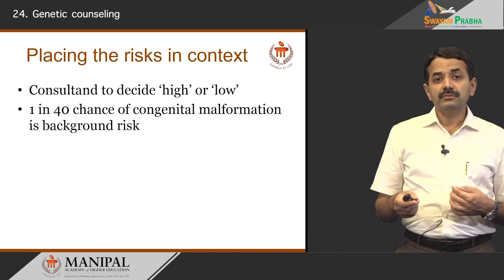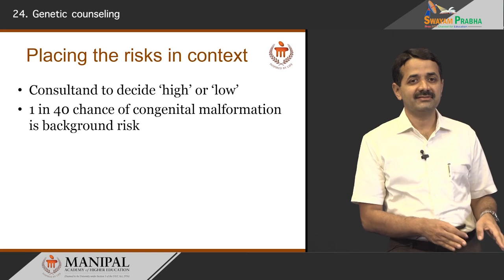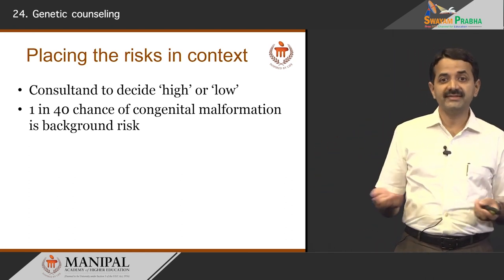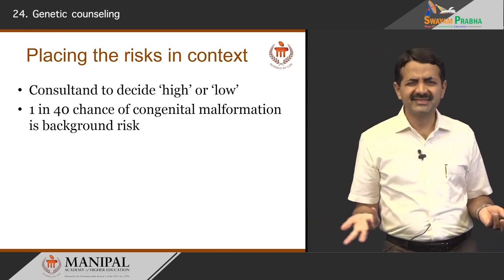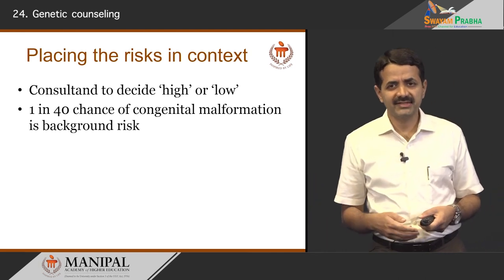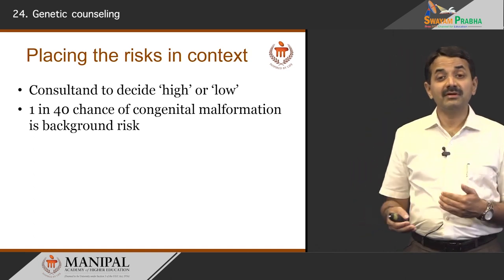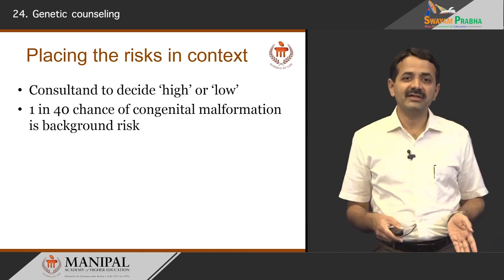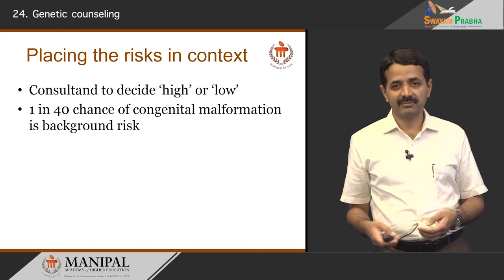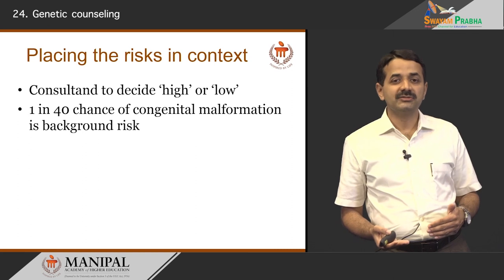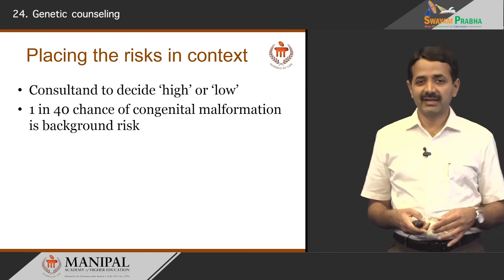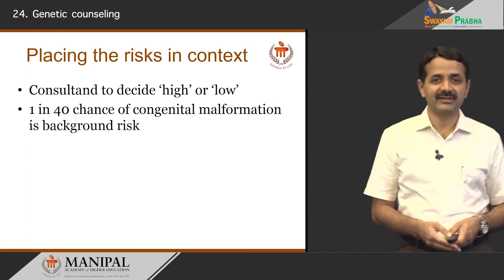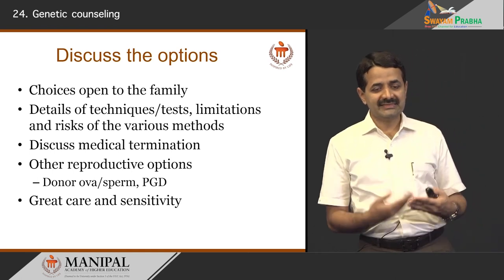It is important to understand that it is the patients, families, or consultands who decide whether a particular risk is high or low. Some people get alarmed at a 1% risk; others may consider a 25% risk acceptable. It is also important to remember that out of 100 pregnancies, 2 to 3 babies are born with major malformations — about 1 in 40 — which is the background risk in the general population. What we are providing is additional risk against this background risk. It is not the counsellor who decides what is high or low risk for the family.